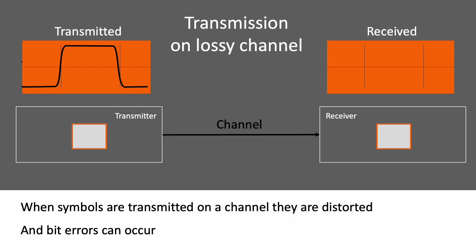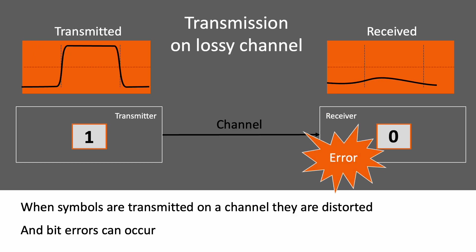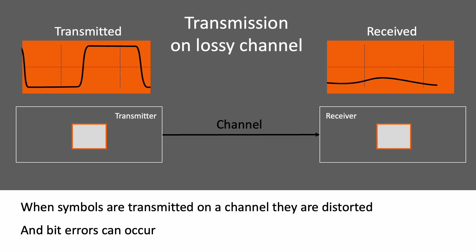When symbols are transmitted on a channel, they are distorted and bit errors can occur.